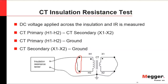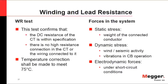For winding and lead resistance testing, we are trying to confirm that the DC resistance of the CT is within specification and that there are no high-resistance connections in the CT or its wiring. Temperature must be corrected to 75°C for comparability and trending analysis over time.